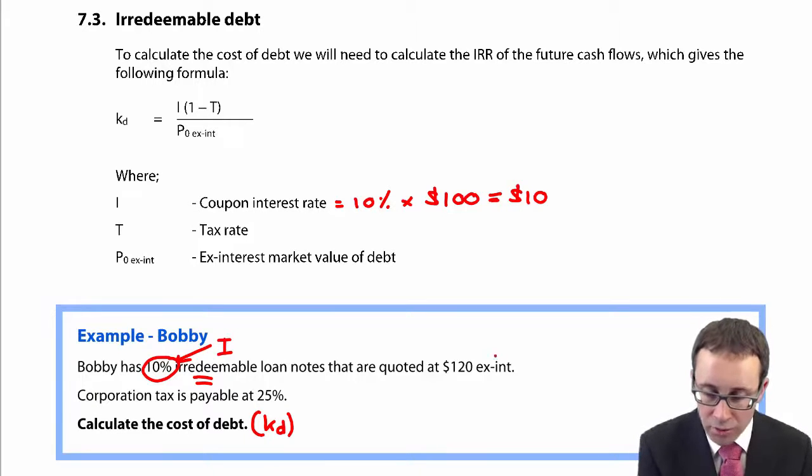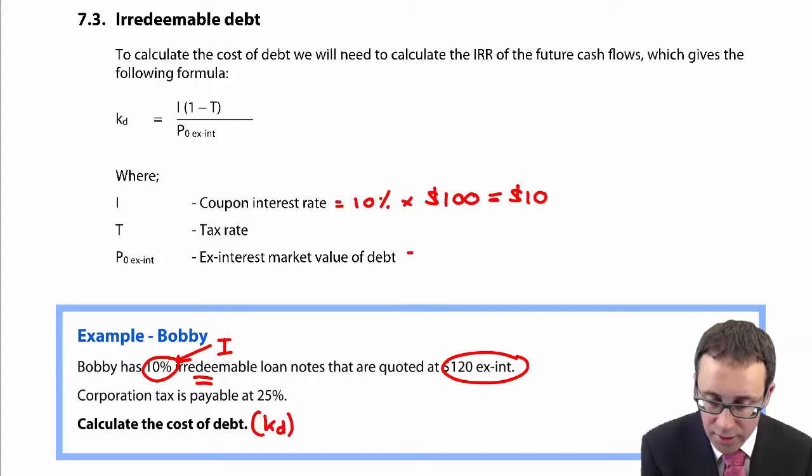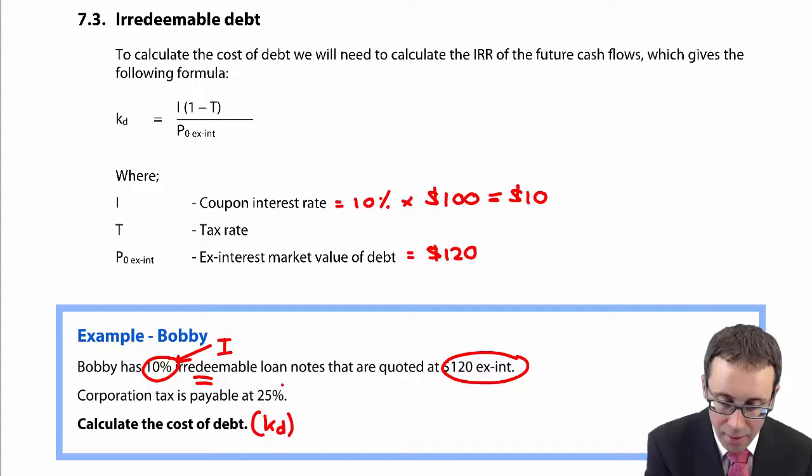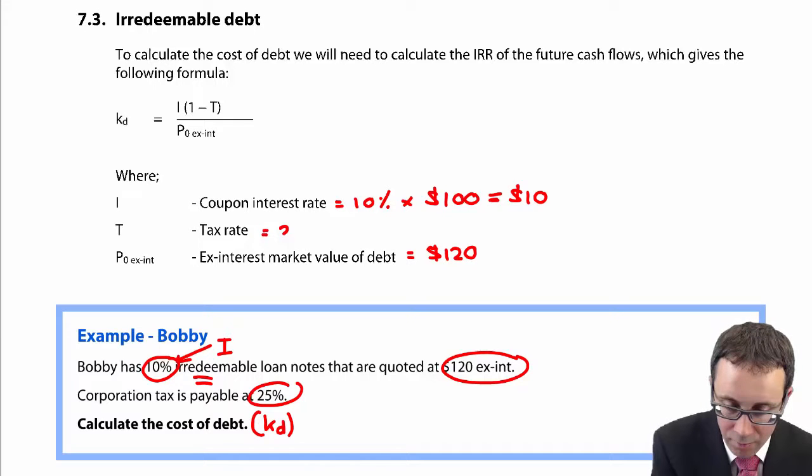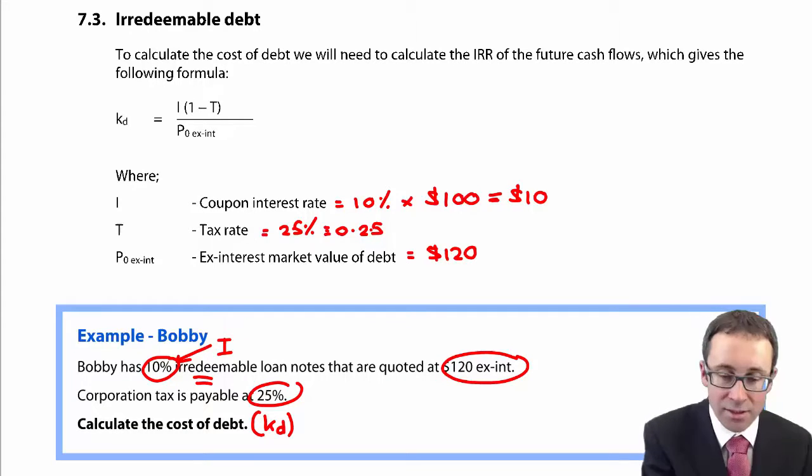You're also told that they are quoted at $120 ex-interest. So here, the market value is $120. And then you have the tax rate there at 25%. So we put that into a decimal, which is there as 0.25.